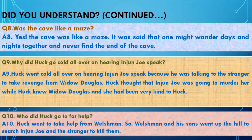Who did Huck go to for help? Huck went to take help from the Welshman. The Welshman and his sons went up the hill to search for Injun Joe and the stranger — in this way, Injun Joe and the stranger would not be able to kill or hurt Widow Douglas.